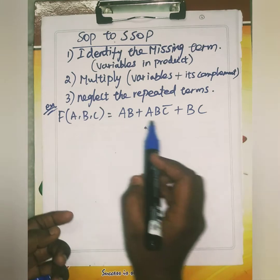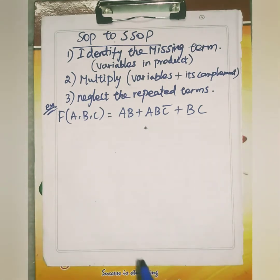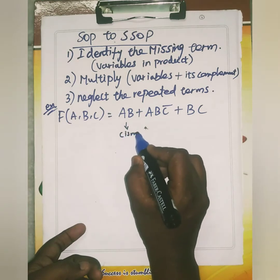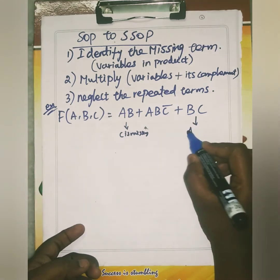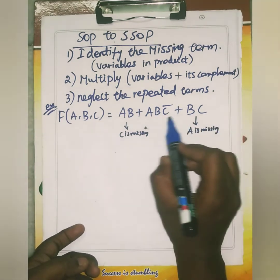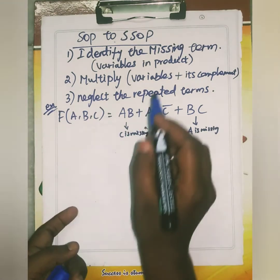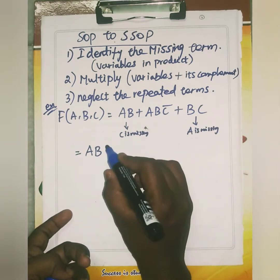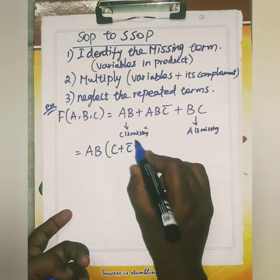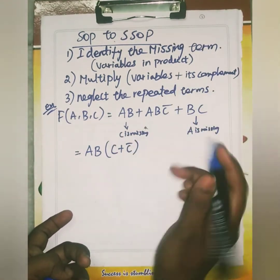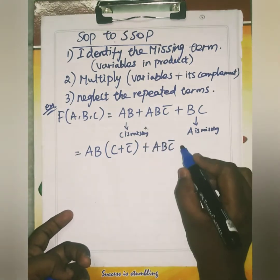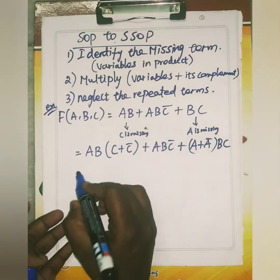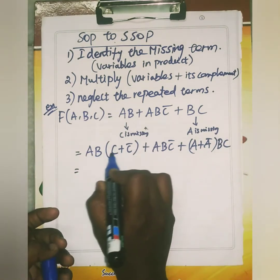The given expression is F of A, B, C equals AB plus ABC complement plus BC. In the first product term AB, C is missing. In the last term BC, A is missing. In the middle term ABC complement, all variables are available. So you multiply: AB times C plus C bar, plus ABC bar, plus BC times A plus A bar.